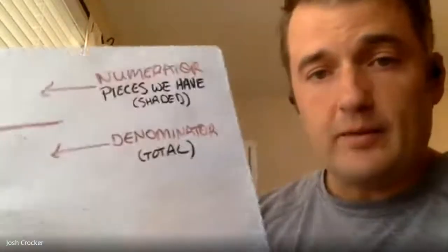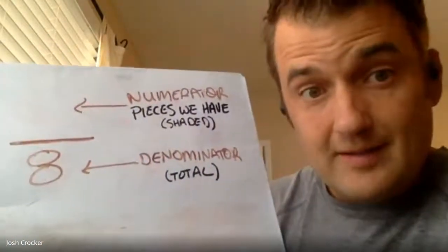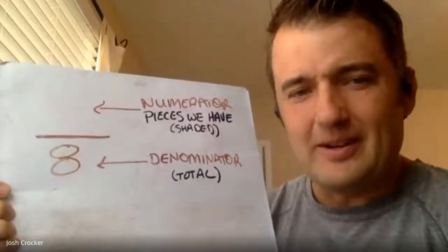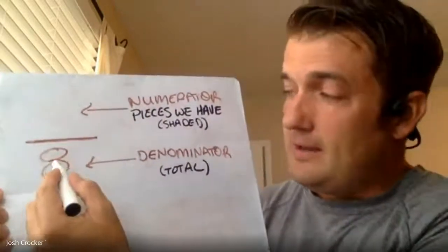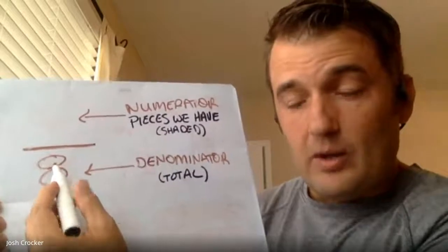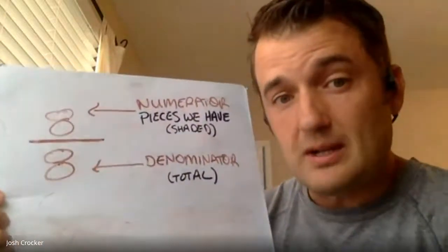There are a couple of other things I want to teach you today about fractions — what a whole looks like and what they call a unit fraction. So a whole: let's say we have a pizza and there are eight slices — that's a pretty normal pizza and it's easier to draw than seven. Even numbers are easier usually because you can go by twos. So if I have eight pieces and I want to show a whole, that's just eight out of eight, meaning 100% — it's all there.